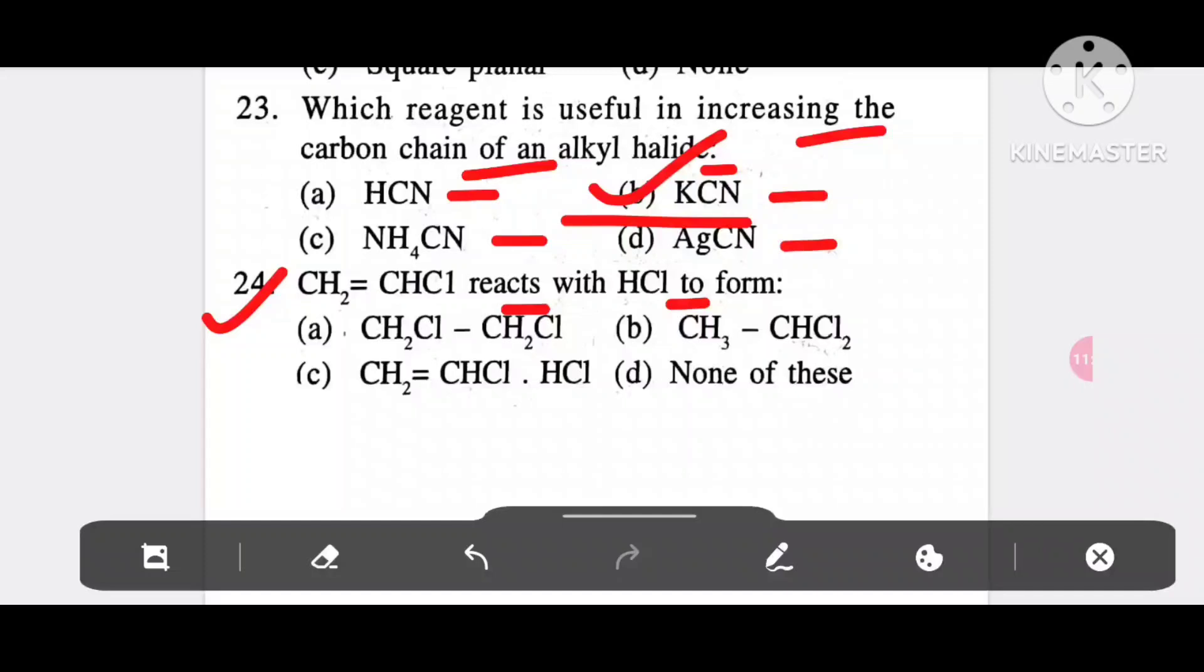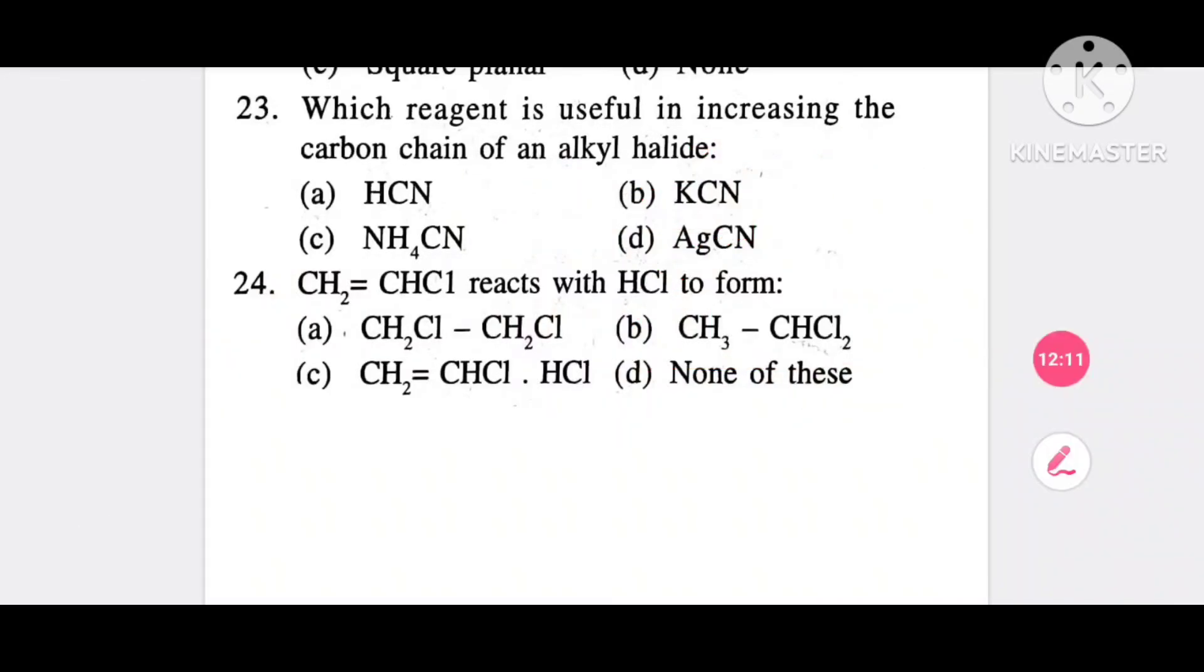Question 24: CH2=CHCl reacts with HCl to form option A, CH2Cl-CH2Cl; option B, CH3-CHCl2; option C, CH2=CHCl·HCl; option D, none of these. It is option B, CH3-CHCl2. Option B is the correct answer. So this completes the set, and we'll see you in the next set.